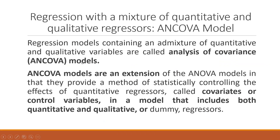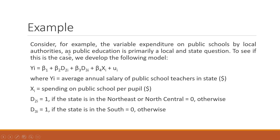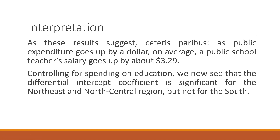Now we include a new model — the ANCOVA (Analysis of Covariance) model, which is a mixture of quantitative and qualitative regressors. Regression modeling containing both quantitative and qualitative variables is called the analysis of covariance model. It extends the ANOVA model and provides a better method of statistically controlling the effects of quantitative regressors (covariates or control variables). The model is Y_i = beta1 + beta2*D2i + beta3*D3i + beta4*X_i, where X_i is spending on public schools per pupil. Let's carry out this analysis in eViews.